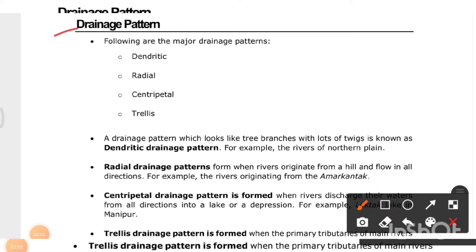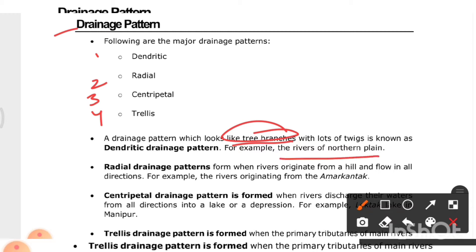The major drainage patterns are: dendritic, radial, centripetal, and trellis. A drainage pattern which looks like tree branches with lots of twigs is known as the dendritic drainage pattern — for example, the rivers of the northern plains.